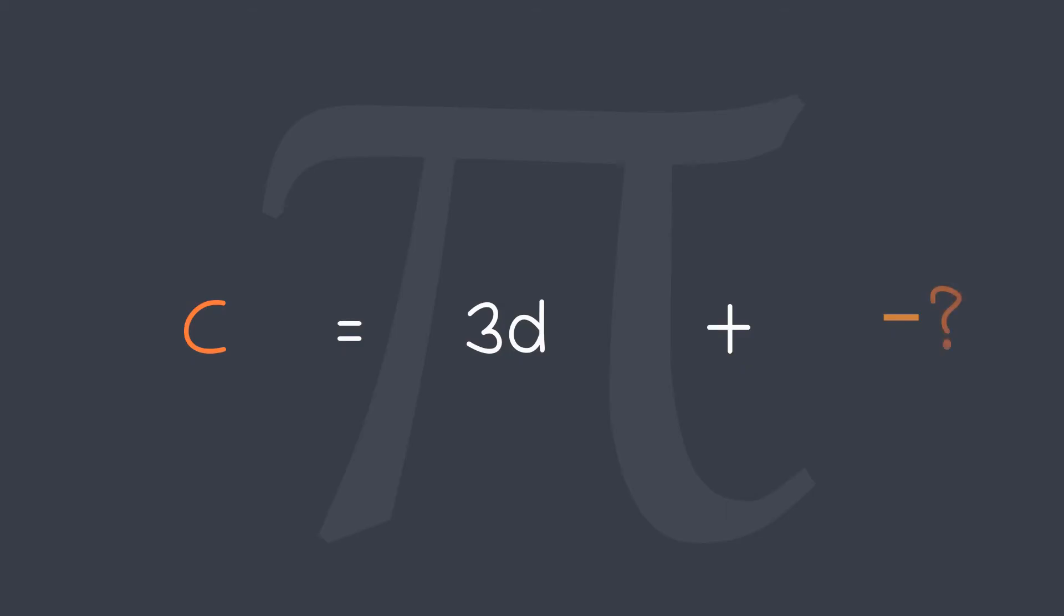Let's now find what is this f in the terms of d. If we neglect this small remaining part, d is about 7 times f or f is 1 by 7th of d. This means c is equal to 3d plus 1 by 7d which is equal to 22 by 7.